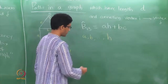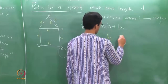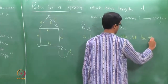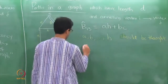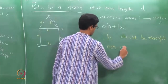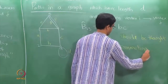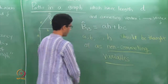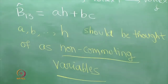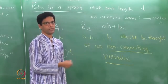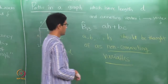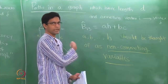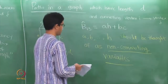When we say non-commuting, we mean that multiplying a with H is to be thought of as different from multiplying H with a — aH is not the same thing as Ha. When you do the multiplication, you need to keep this in mind: variables which occur to the left must be retained on the left; variables on the right must be retained on the right. You should not change the order.